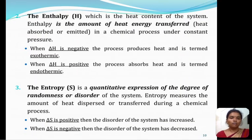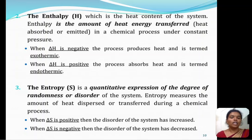We will now see about certain terms — enthalpy and entropy. Enthalpy is denoted by the letter H, which is the heat content of the system. Enthalpy is the amount of heat energy transferred in a chemical process under constant temperature. When delta H is negative, the process produces heat and it is termed exothermic. When delta H is positive, the process absorbs heat and it is termed endothermic.